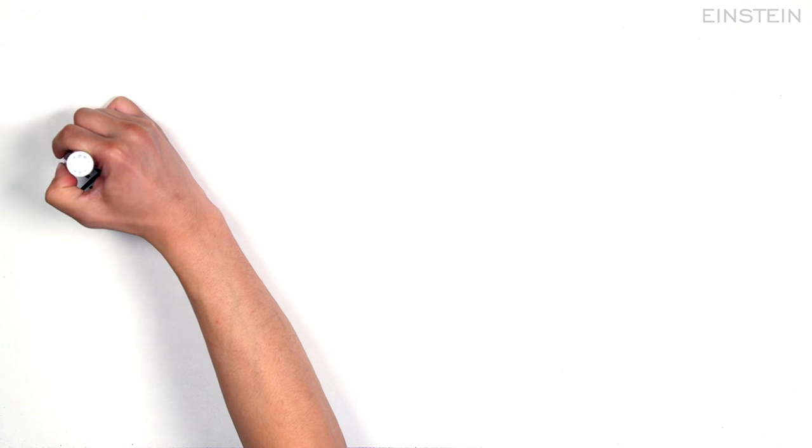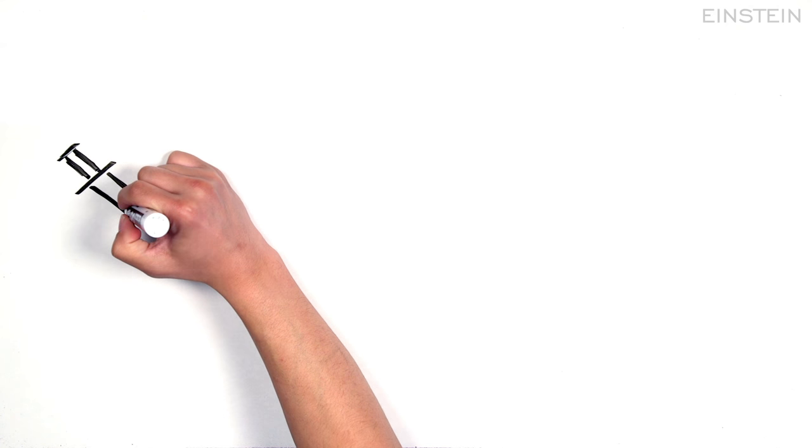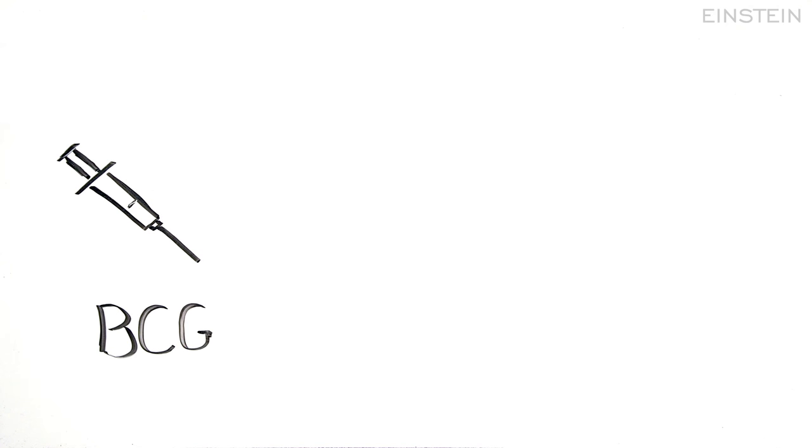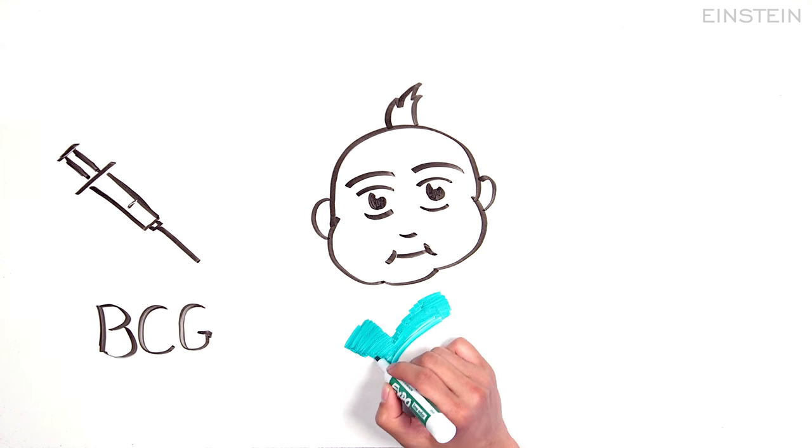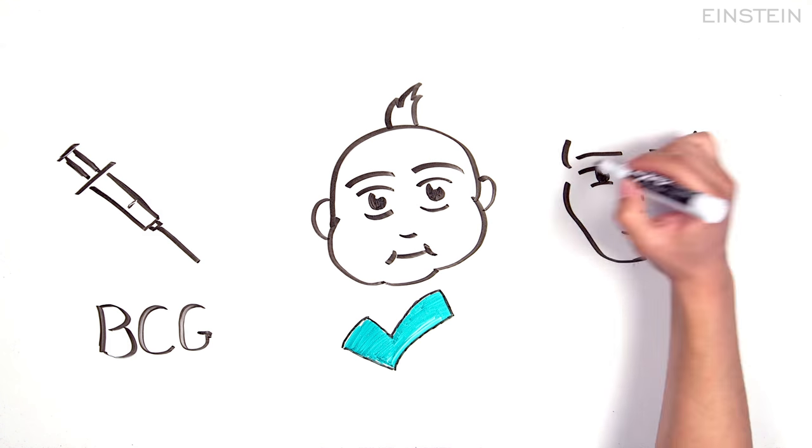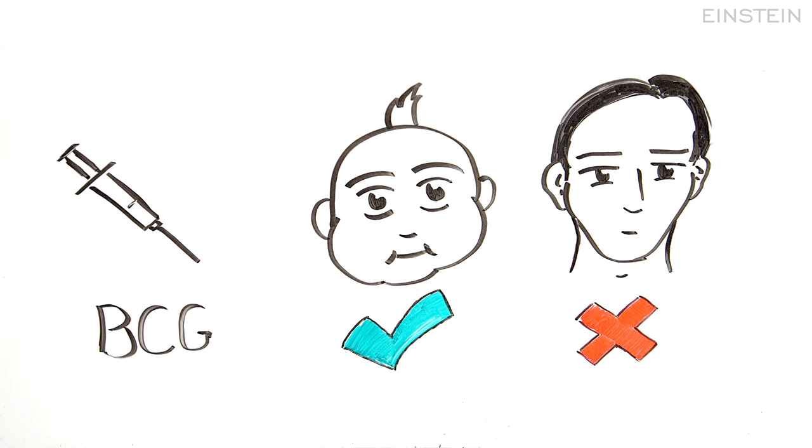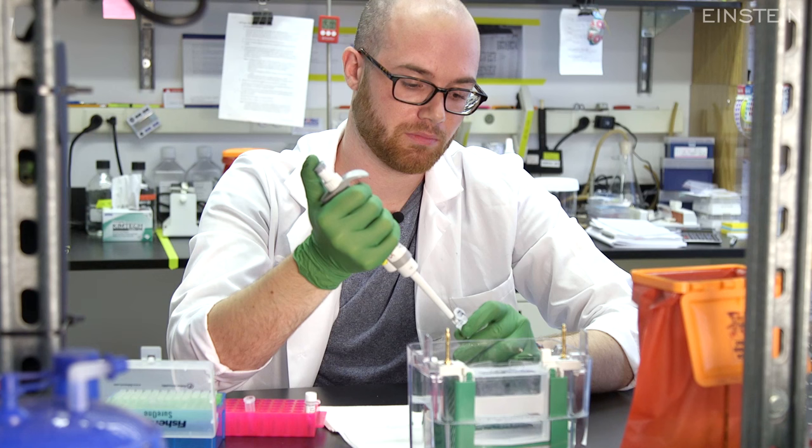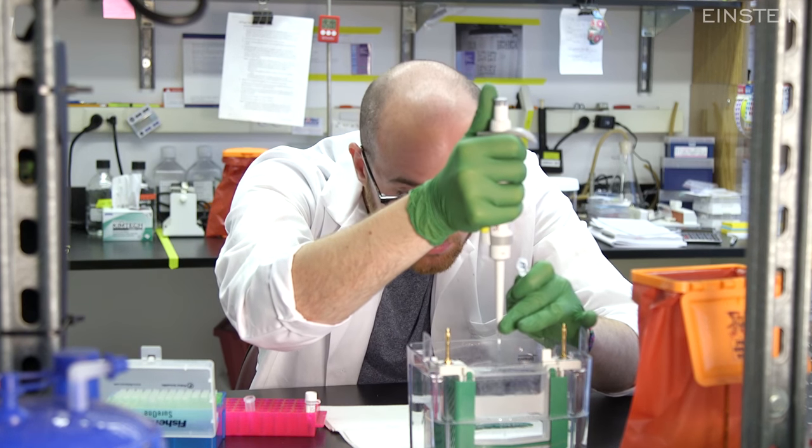Currently, only one vaccine is approved for use against tuberculosis. This vaccine, called BCG, was developed almost 100 years ago and is only effective in children aged 1 through 12 and has shown limited to no efficacy in adults. That's why our lab's goal is to create a vaccine that's effective in both children and adults and will lead to the eradication of tuberculosis.